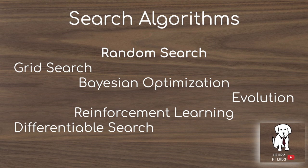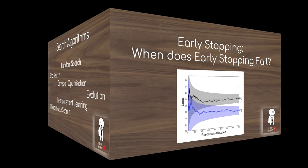These search algorithms include random search, grid search, Bayesian optimization, evolution, reinforcement learning, and differentiable search. In the Hyperband paper, they use random search, but speed it up through the Hyperband strategy of resource allocation.